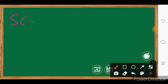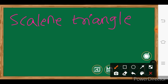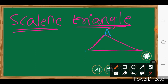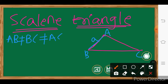A scalene triangle is a triangle which has three different sides — three different lengths of sides. In triangle ABC, AB length is not equal to BC length, and BC length is not equal to AC length. If we assume this length is equal to a, this is b, this is c, because the three sides are different.